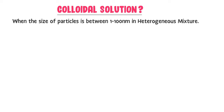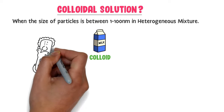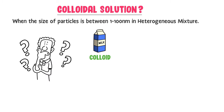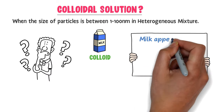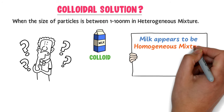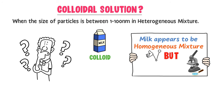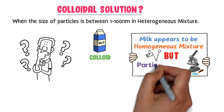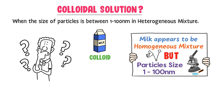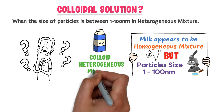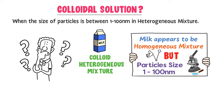For example, consider milk. Milk is a colloid or colloidal solution. A lot of students are confused here — milk appears to be a homogeneous mixture, but its microscopic description reveals that its particle size is between 1 up to 100 nanometers. So this particle size makes it not only a heterogeneous mixture, but also a colloid. Note that colloids appear to be homogeneous, but it may not be the case.